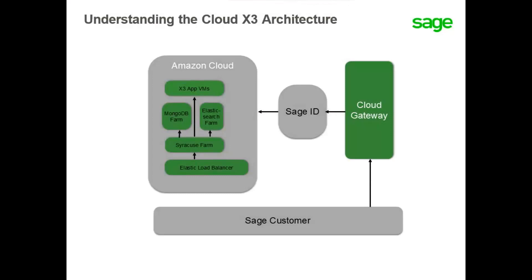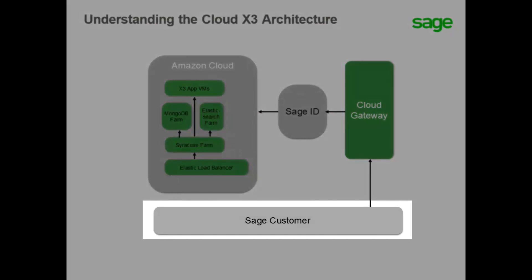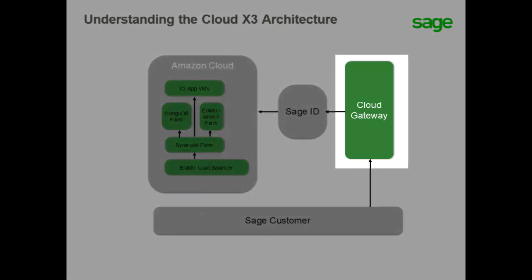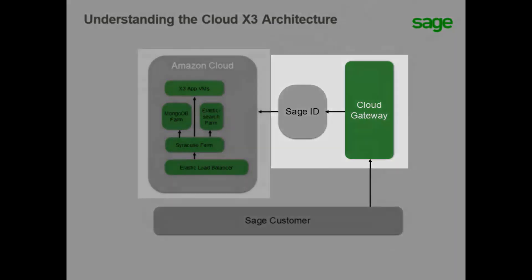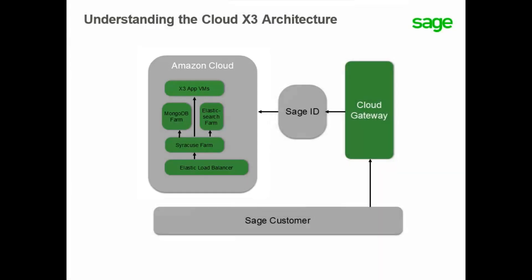Let's now take a look at the architecture of a Sage X3 Cloud installation. You can access Sage X3 Cloud from any mobile device or desktop using your Sage ID, no matter where you are. If you have an internet connection, you can sign in at www.sagex3.com or by entering the URL directly in your favorite web browser. The cloud gateway allows you to select your instance and then enter your Sage ID and password, which provides access to the Amazon Cloud and the hosted application within that cloud instance. Sage X3 Cloud is a multi-tenant environment — each tenant has their own virtual machines containing the application and print servers, as well as their own database.